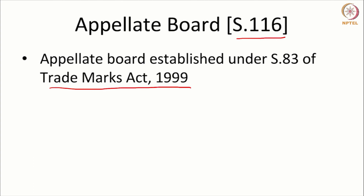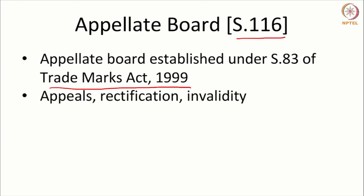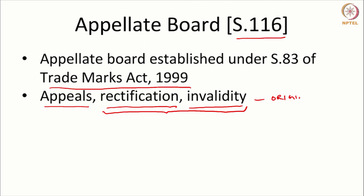The Intellectual Property Appellate Board can deal with matters concerning intellectual property rights like trademarks, patents, designs, and now there is also a provision for dealing with the copyright side. The powers pertain to appeals from the patent office or sometimes even from the central government. They also have the power to rectify the register — called rectification proceedings — and the power to decide revocation or invalidity proceedings. Rectification and invalidity pertain to the original powers of the appellate board.